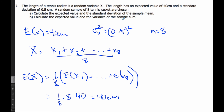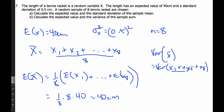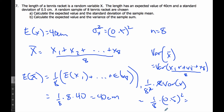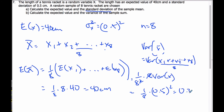To find the standard deviation of the sample mean, I work on the variance first. The variance of the sample mean is the variance of x1 plus x2 all the way up to x8, divided by 8. Pulling out the coefficient gives 1 over 8 squared times 8 variances, which simplifies to 1 over 8 times the variance of x, which is 0.5 squared. The variance ends up being 0.03125, so the standard deviation is the square root of 0.03125, which is approximately 0.177.